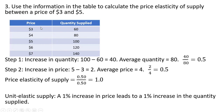Now for the price: we get an increase in price of $2, and divide it by the average price. The average of 3 and 5 is 4, so we take 2 divided by 4 and also get one half. The price elasticity of supply is 0.5 divided by 0.5, which equals 1. This is an example of unit elastic supply — a 1% increase in price leads to a 1% increase in the quantity supplied.